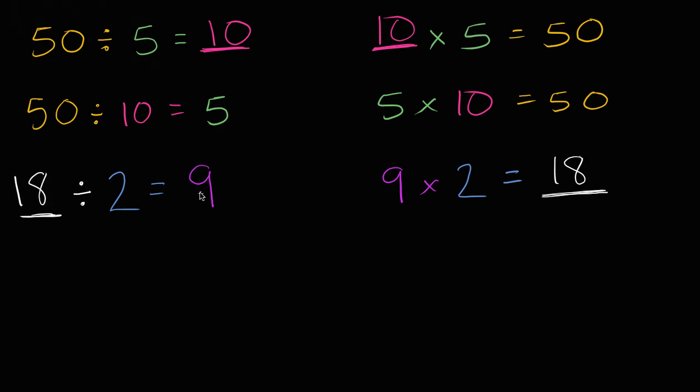18 divided by 2 is 9. And that's really describing how 18, 2, and 9 relate to each other. Two 9s is 18, or 9 2s is 18. Or if I were to divide 18 into 2 groups, each group would have 9. Or if I were to divide into groups of 2, you would have 9 groups. Any way you look at it, 18 divided by 2 is 9. 9 times 2 is 18.